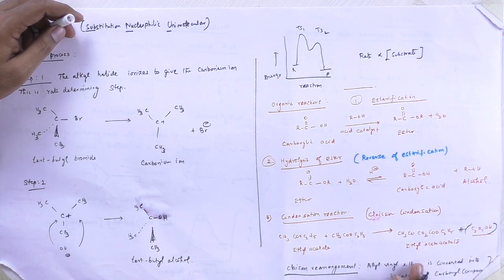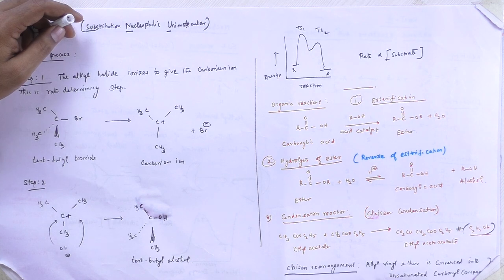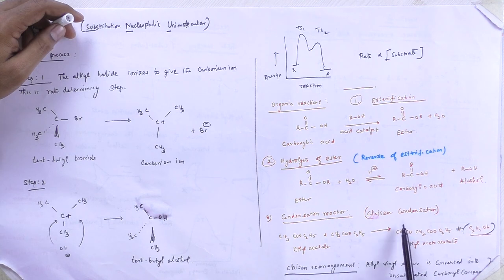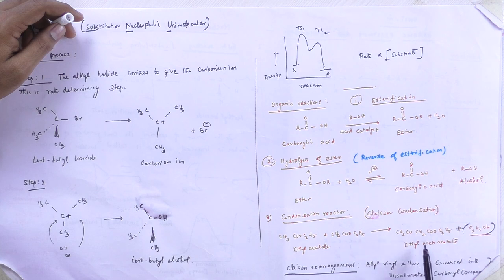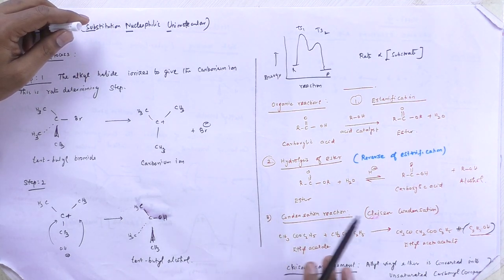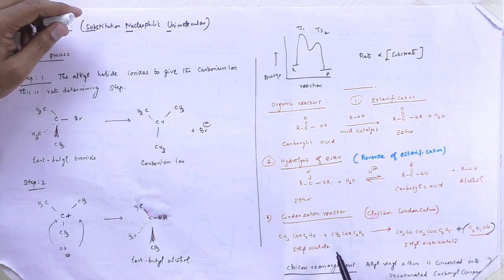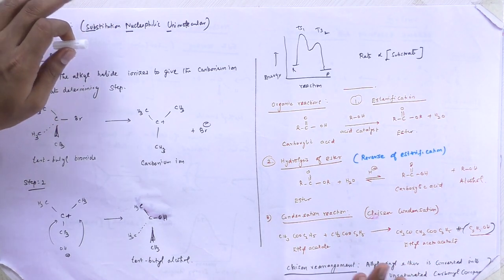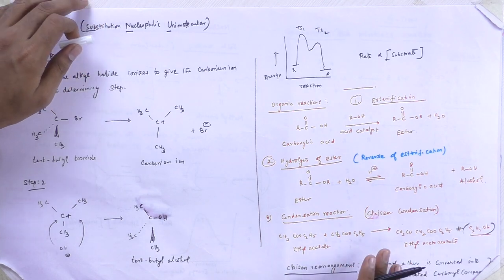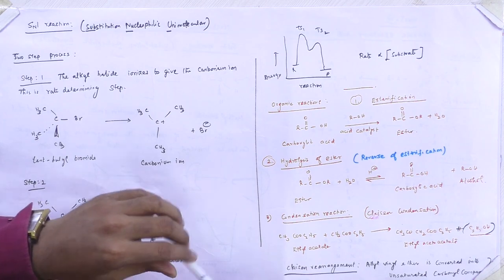Next is Claisen rearrangement. Here, allyl vinyl ether is converted into an unsaturated carbonyl compound. Note that condensation — formation of ethyl acetate — and Claisen rearrangement — formation of unsaturated carbonyl compound — are different. With this, this unit is complete; I am giving a total layout of the keywords of this unit and we will continue in the next class.